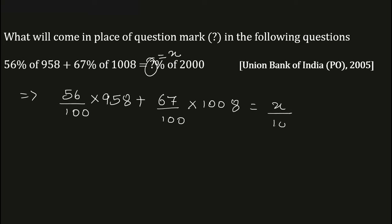Now again here, 56 into 958 upon 100 can be written as 9.58, plus 67 into 1008 upon 100 can be written as 10.08, which is equal to—zeros and zeros got cancelled—20x.